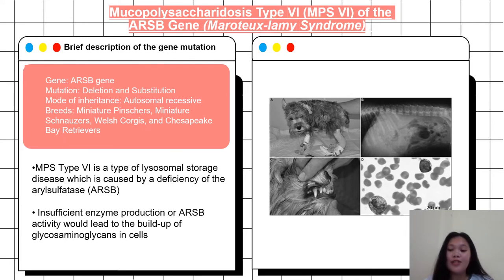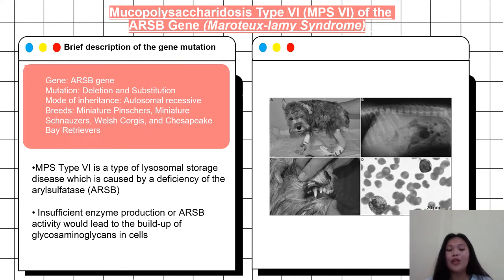Moreover, the mutated gene is located in the 13th to 14th region of the q-arm of chromosome 5, where missense mutation and/or deletion mutation may occur on its DNA. Some of the breeds that may be affected by this type of gene mutation include miniature pinschers, miniature schnauzers, Welsh corgis, and Chesapeake Bay retrievers.